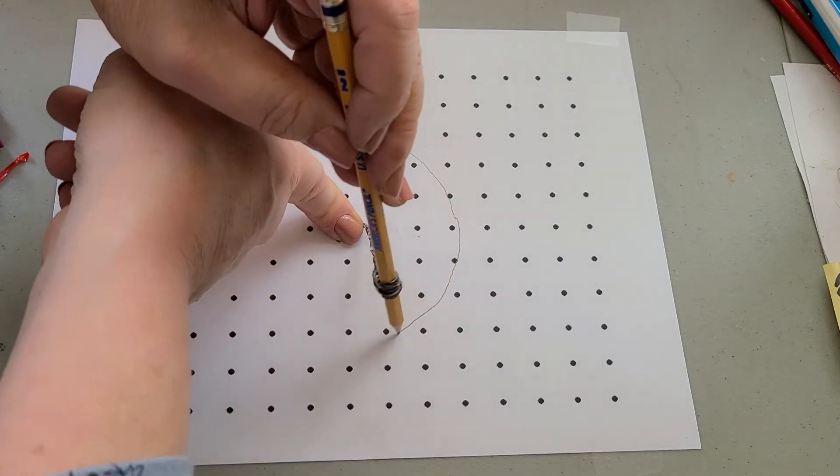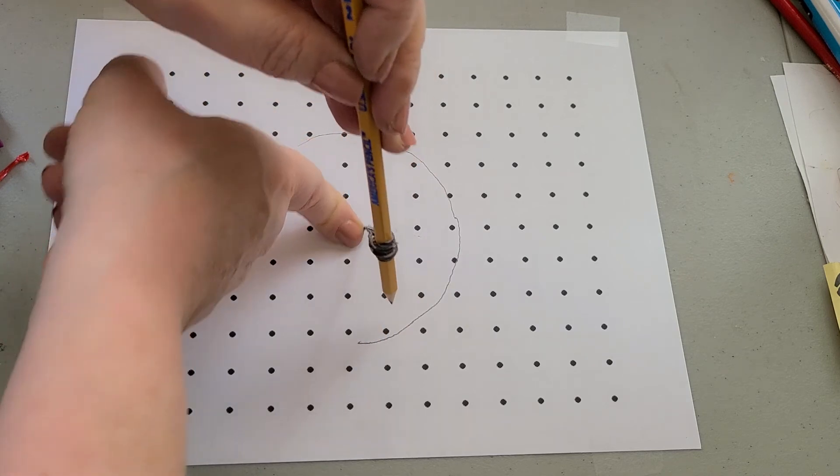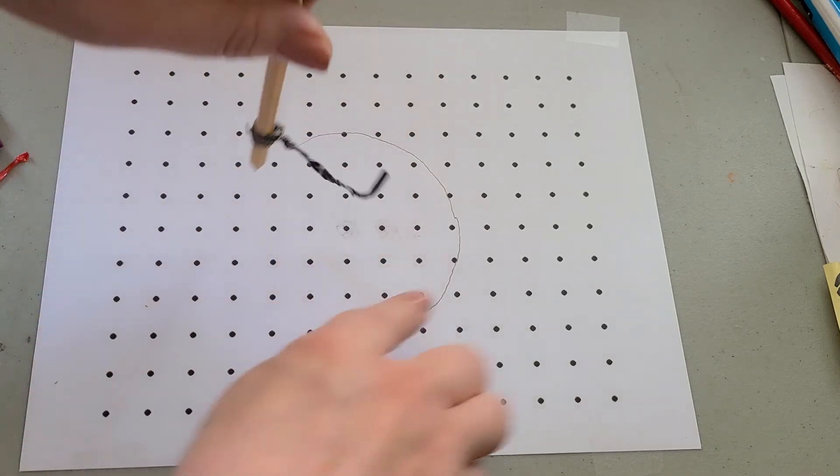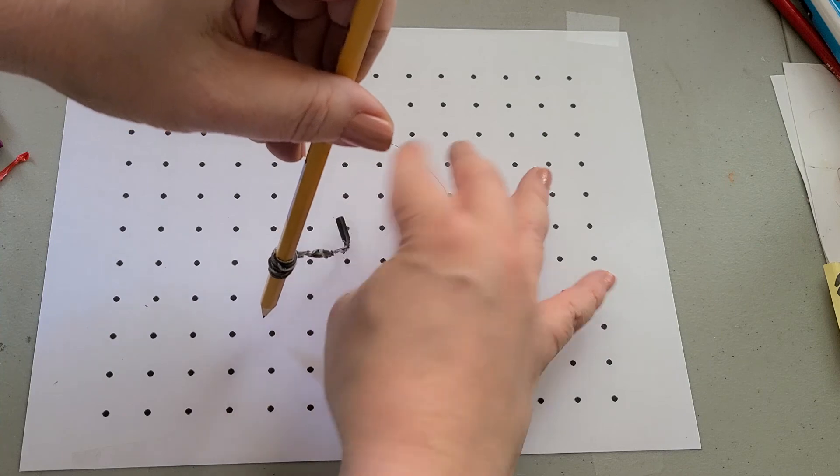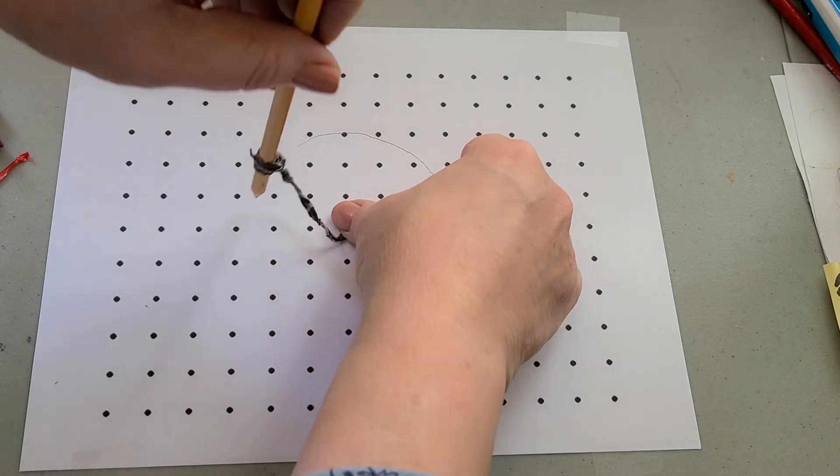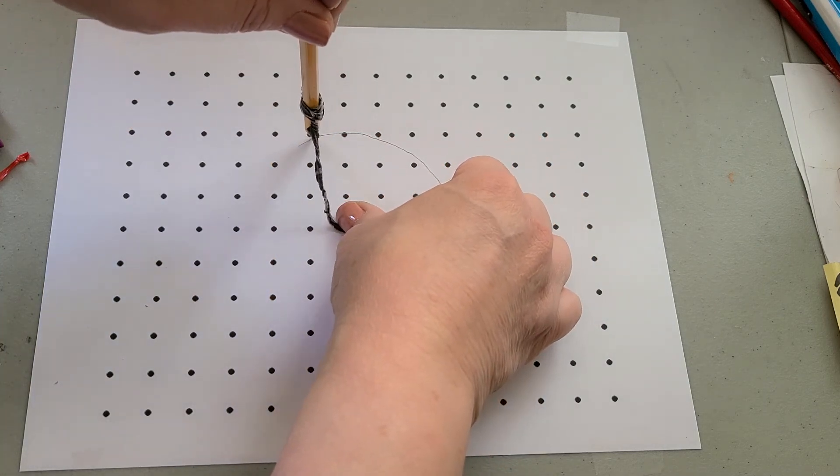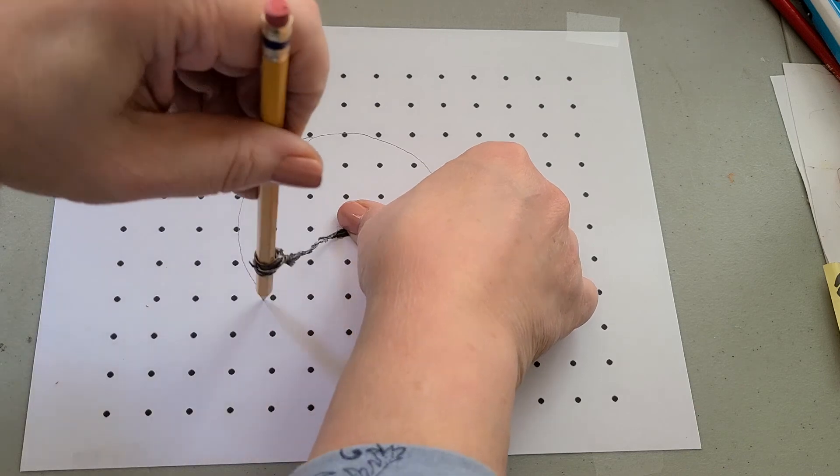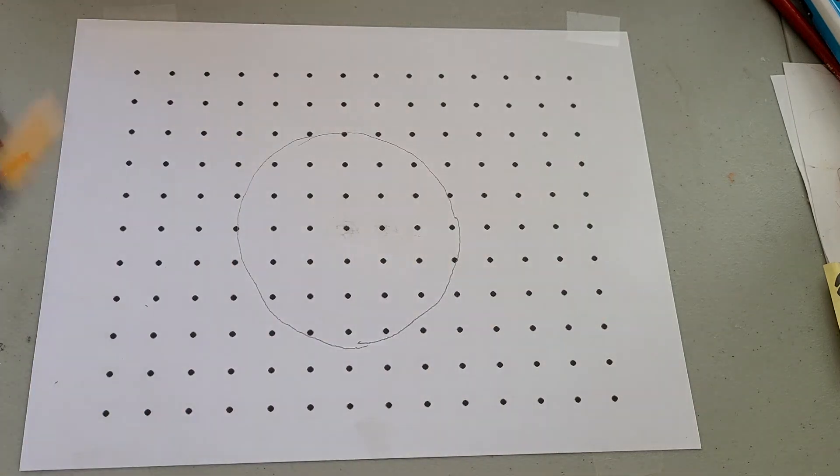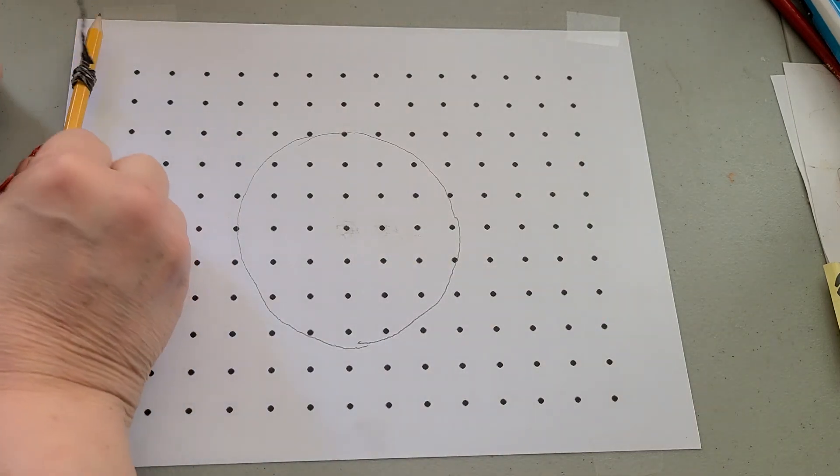We've got to make sure our finger stays on that dot as we go around. Try using my thumb, see if that holds it good, and we can go around. We can make a circle. Now, as you get older, there's a tool that does this. It's called a compass.